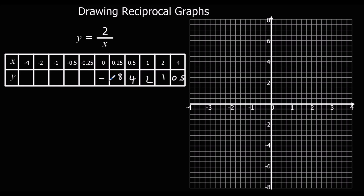Then we're going to get the same pattern repeated on the other side — exactly the same, but the answers are going to be negative. When you divide a positive by a negative, you get a negative answer. So we're going to get minus 8, minus 4, minus 2, minus 1, and minus a half.